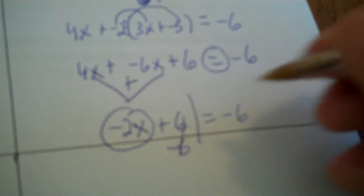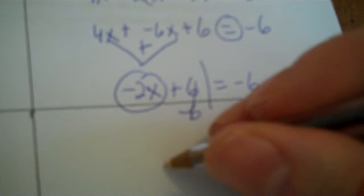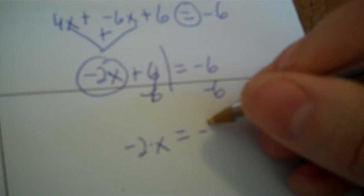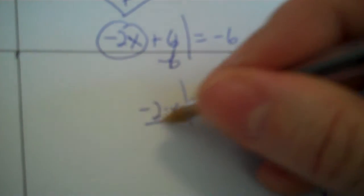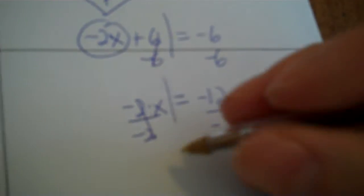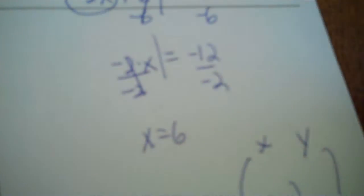So you minus 6 from each side. Negative 2 dot x. Negative 6 minus 6 is negative 12. Divide each side by negative 2. And negative 12 divided by negative 2 is 6. X equals 6.